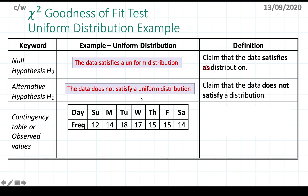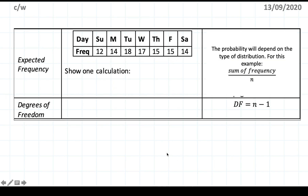Just read the question carefully — whatever the question tells you, that's what you're going to say. The contingency table will always be given, so this is the observed table for this one. We don't have to do anything yet, so we just leave that as it is. Then we have the expected frequency.